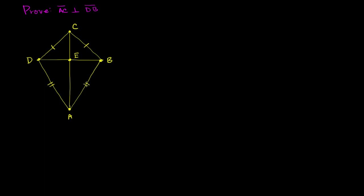Here is our toolkit. We have the side-side-side postulate: if the three sides are congruent, then the two triangles are congruent. We have side-angle-side: two sides and the angle in between are congruent, then the two triangles are congruent. We have ASA: two angles with a side in between. And then we have AAS: two angles and then a side. These are our postulates — we assume they imply congruency.